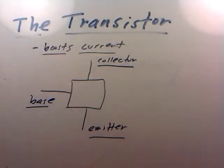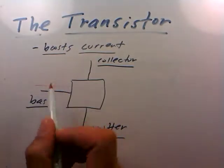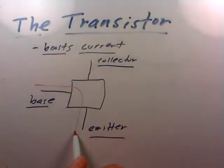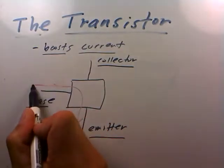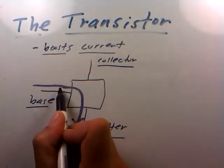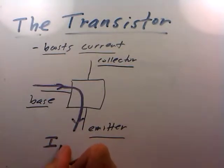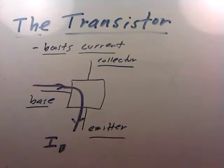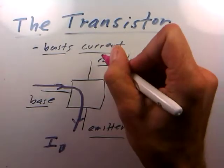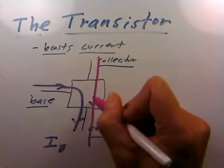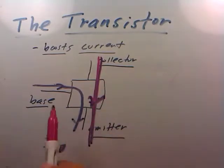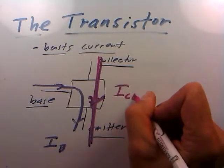Here's how the transistor works: if you send a small current into the base, it goes through the transistor and comes out the emitter. That's the way the transistor is defined — current injected into the base works itself through the transistor and comes out of the emitter. We'll call that I_base. What will happen when you inject that current into the base is that a larger current will flow between the collector and emitter.